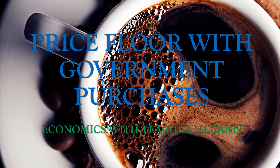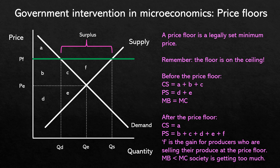Hello economists. In this short video we will look at the scenario where the government imposes a price floor on an agricultural product and then purchases the excess production. Let's start with what we know about price floors. A price floor is a legally set minimum price, shown here at PF. The price that can be legally charged by sellers cannot be lower than the price floor or minimum price.